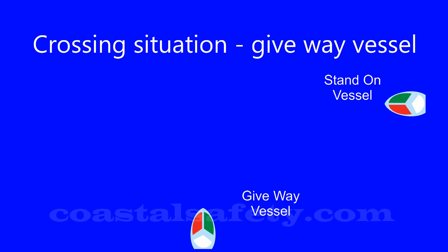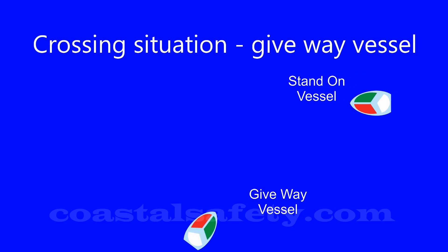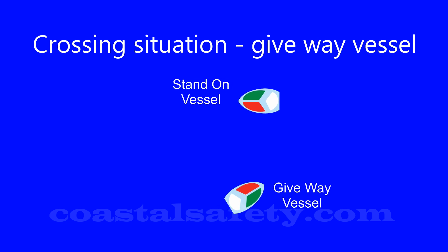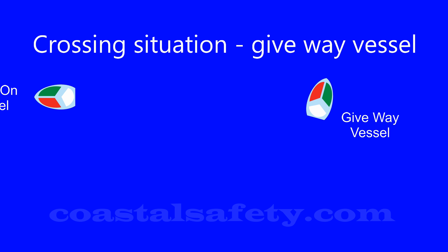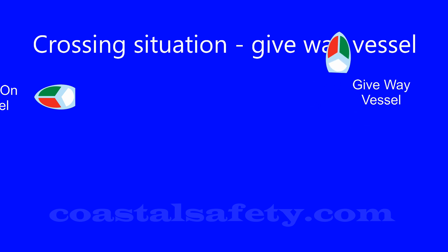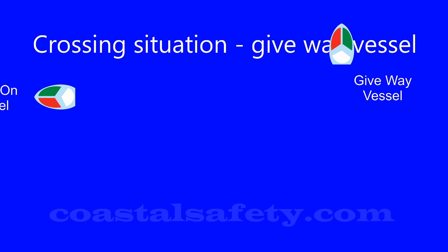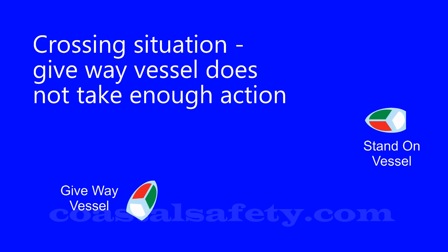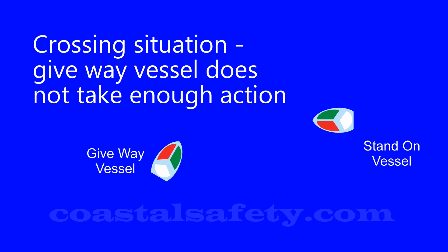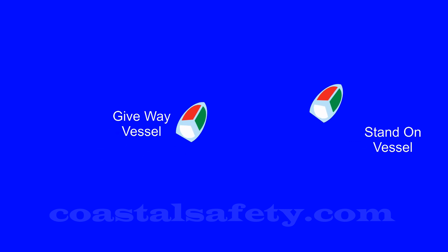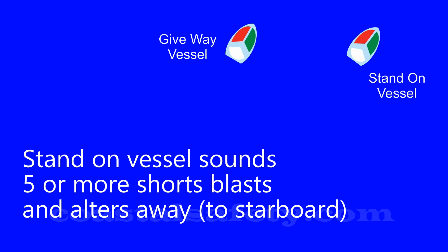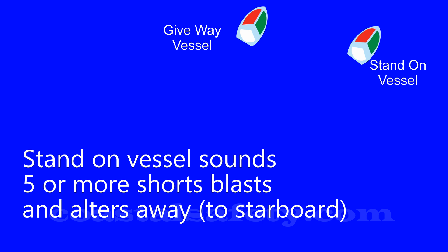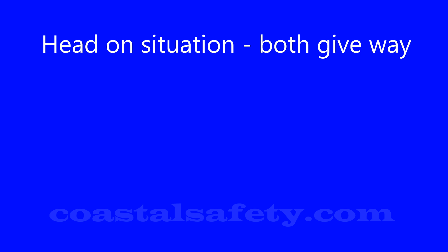Let's recap the crossing situation: the stand-on vessel is to the right and the give-way vessel is altering course in plenty of time, passing astern of the stand-on vessel. If the give-way vessel doesn't do enough to avoid a collision, the stand-on vessel should sound five or more short blasts, alter away from the offending vessel, and when safe to do so come around to starboard and pass behind the give-way vessel. We don't know what problems they have on board — the main thing is to avoid a collision.